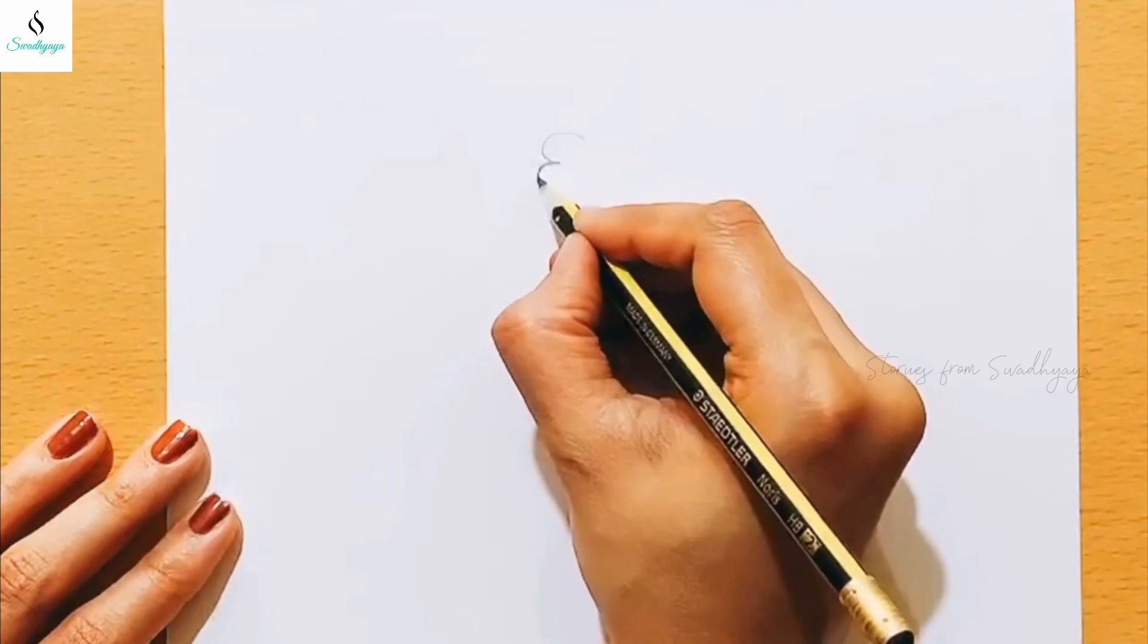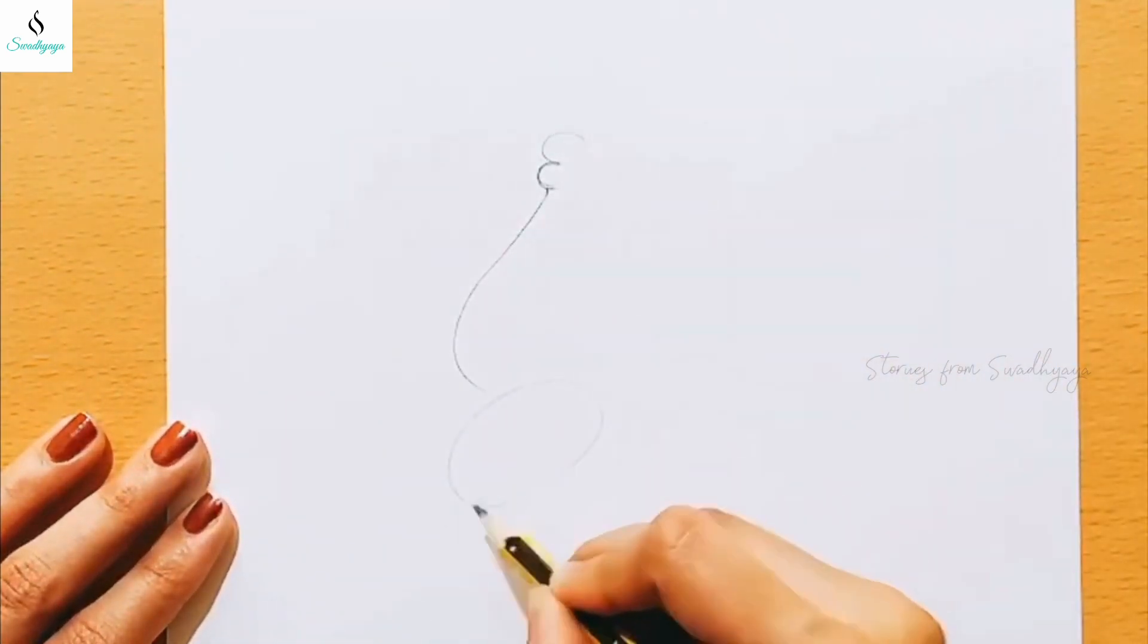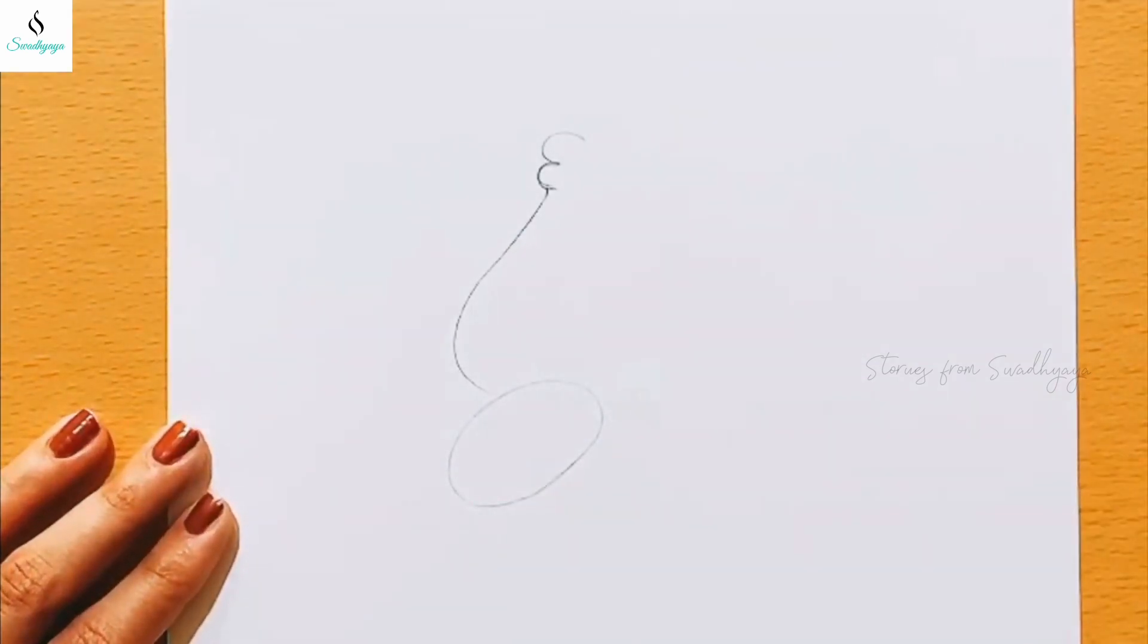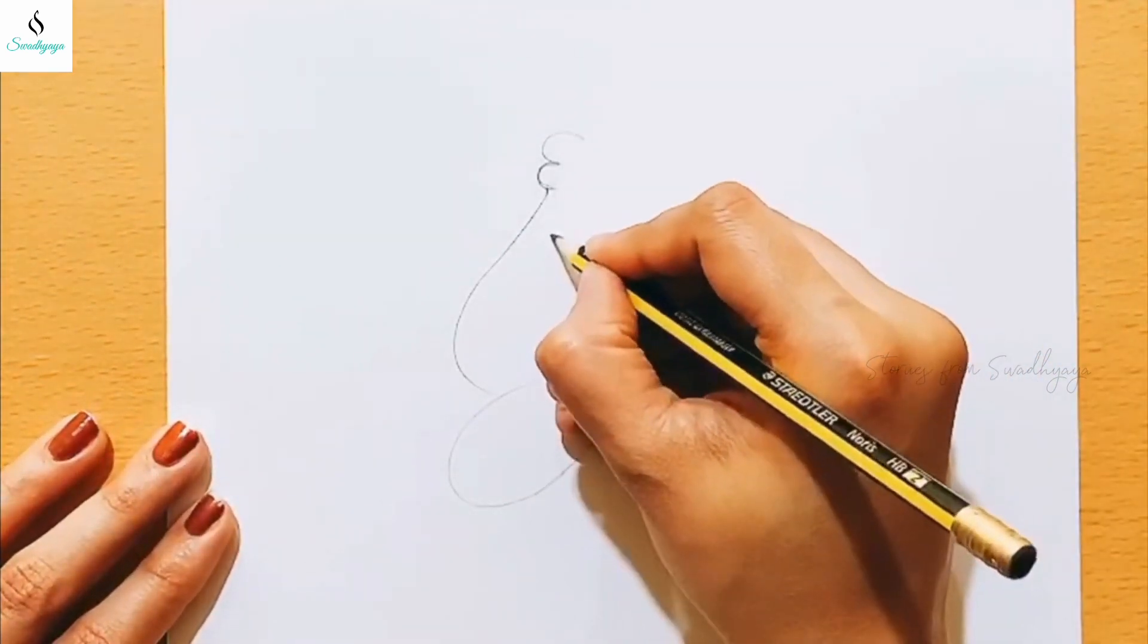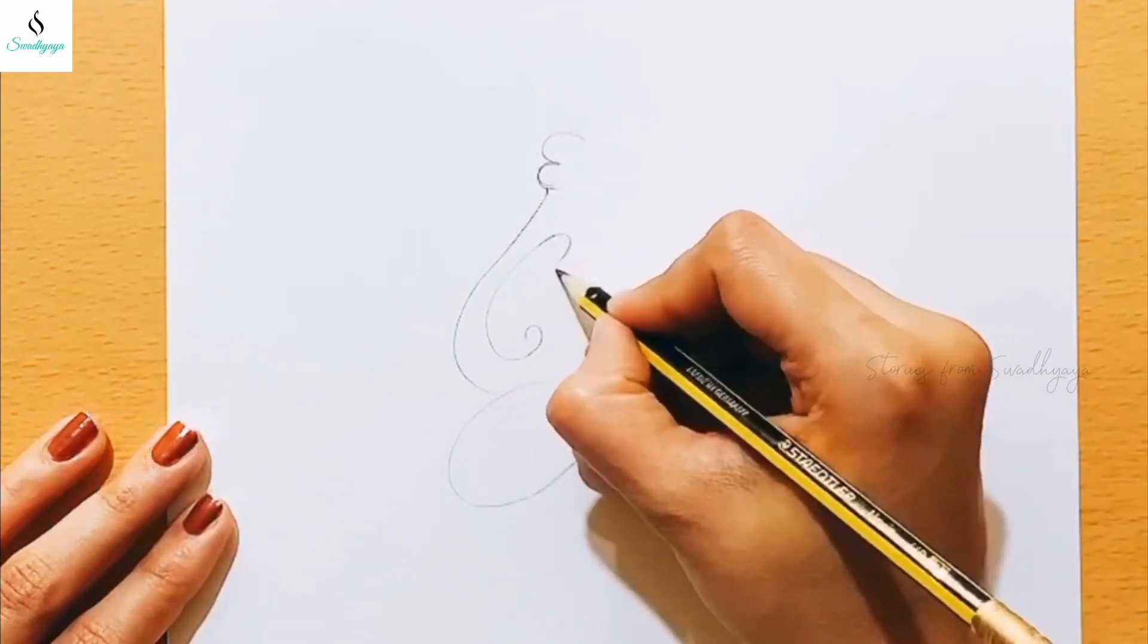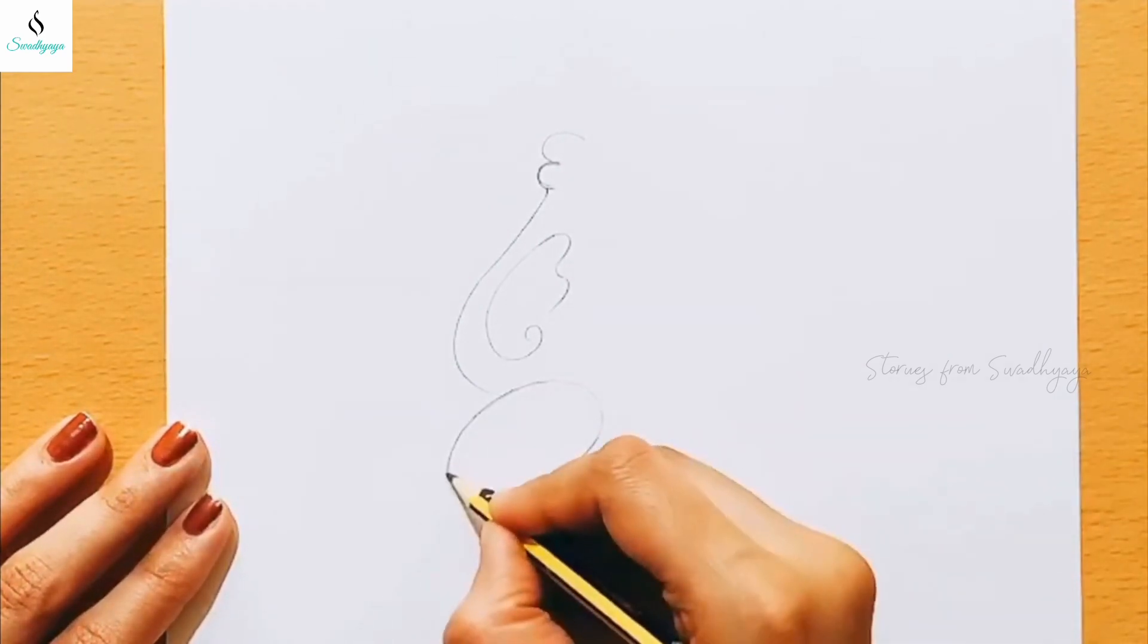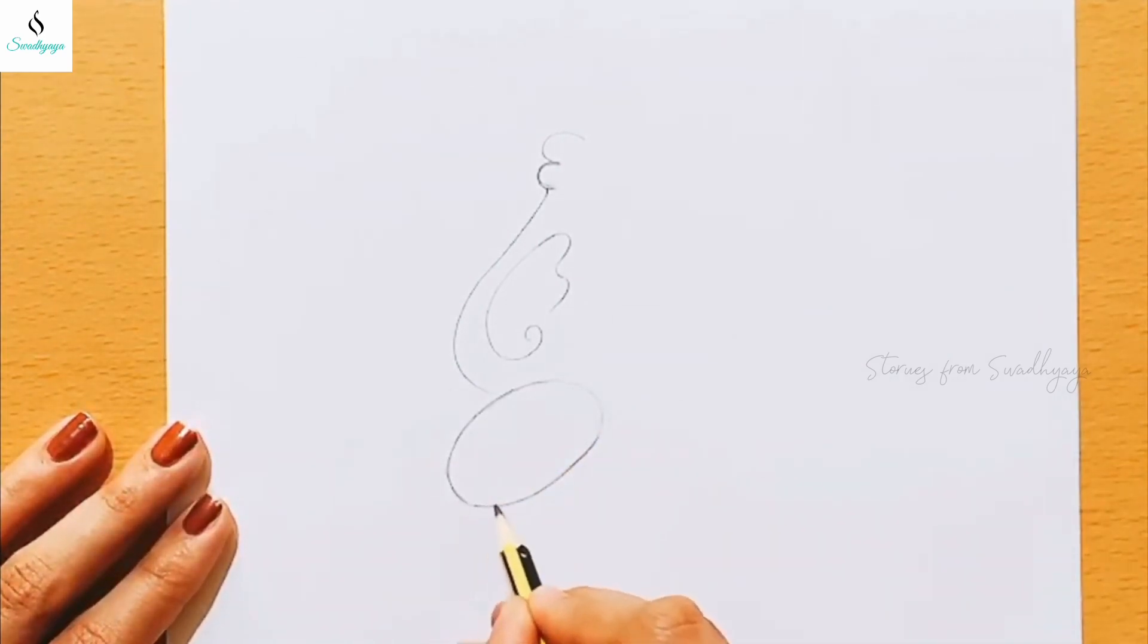This is again another way in which we can draw the ears. To understand the full beauty of the ears it should also be seen with the ornaments, and when you see it along with the whole picture of the deity you'll understand it better. As you can see here in Kerala mural painting, the anatomy is very different from the actual human anatomy.